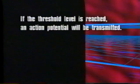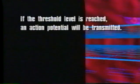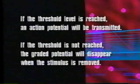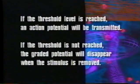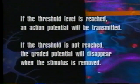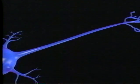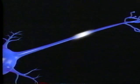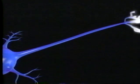If the threshold level is reached, an action potential will be transmitted. If the threshold is not reached, the graded potential will disappear when the stimulus is removed. The changes that occur during an action potential at one site start a chain reaction that's propagated along the membrane. That's why action potentials are referred to as all-or-nothing events.